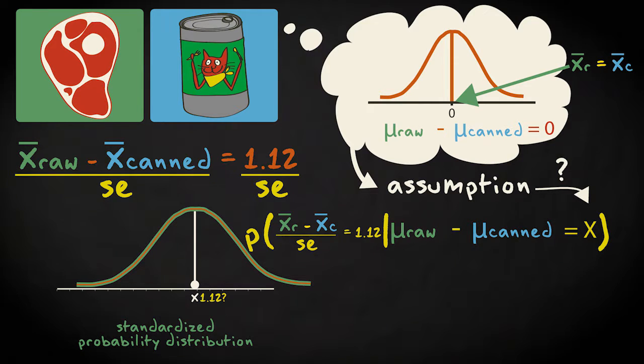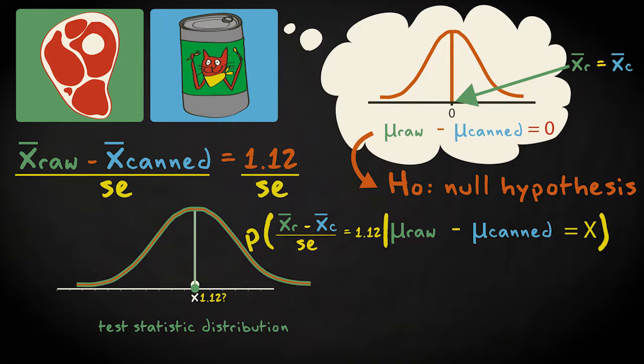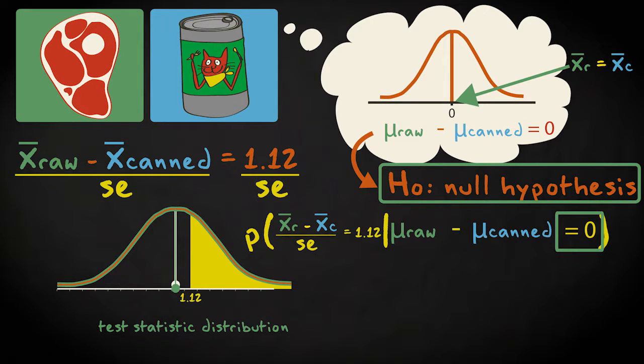This is what we call the null hypothesis. It provides an unambiguous, exact value we can use to pin down the distribution. We call this final version of the distribution the test statistic distribution. If the null hypothesis is true, the difference in the population will be zero, which is the most likely value for our test statistic. So the mean of the test statistic probability distribution lies at zero.